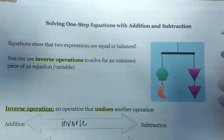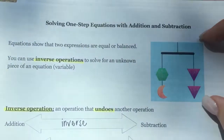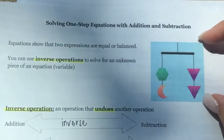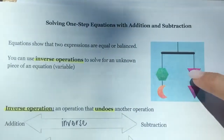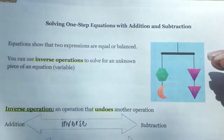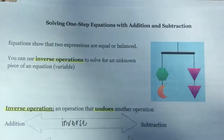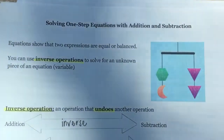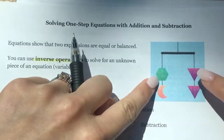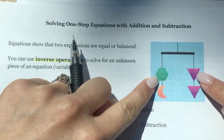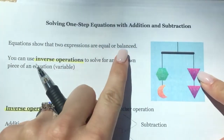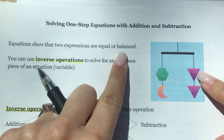In a previous lesson we played around with puzzles and tried to attach different values to each shape to balance the puzzle. Equations work the same exact way — just like we had to make sure each side of the balance was equal, equations show us that two expressions are equal or balanced.